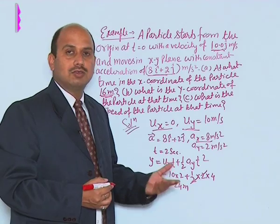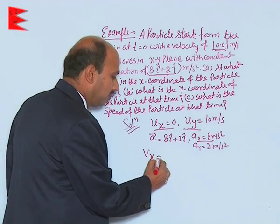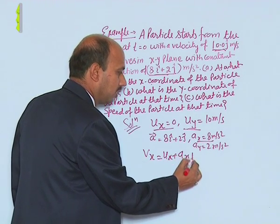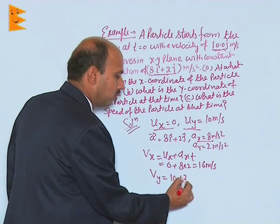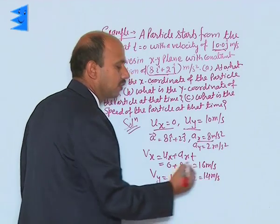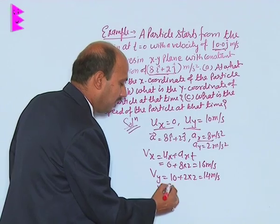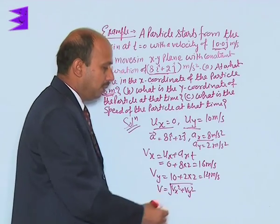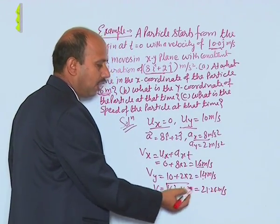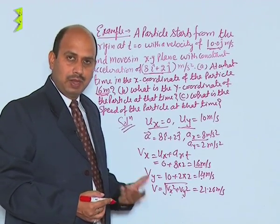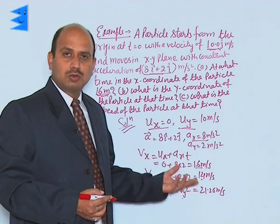Now we calculate the velocity at t = 2 seconds. Since it is motion in a plane, there are two velocity components: v_x and v_y. We get v_x = u_x + A_x·t = 0 + 8×2 = 16 m/s. Similarly, v_y = 10 + 2×2 = 14 m/s. The resultant speed is v = √(v_x² + v_y²) = √(16² + 14²) ≈ 21.26 m/s. This example covered finding x-coordinate, y-coordinate, time, and velocity at t = 2 seconds.